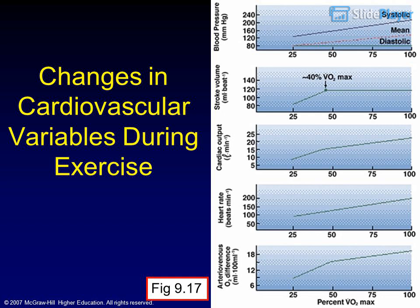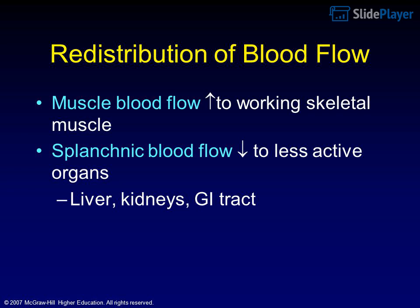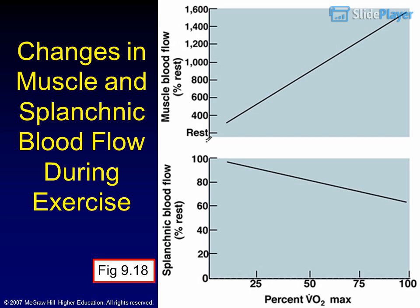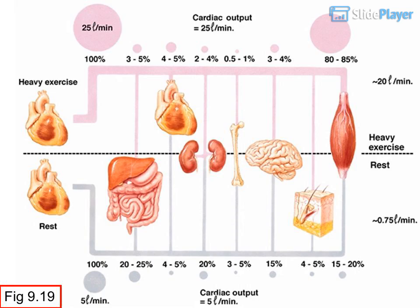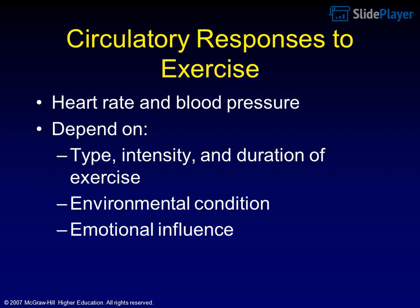Cardiovascular variables during exercise are shown in Figure 9.17. Redistribution of blood flow: muscle blood flow increases to working skeletal muscle, while splanchnic blood flow decreases to less active organs such as the liver, kidneys, and GI tract, shown in Figures 9.18 and 9.19. Blood flow regulation involves withdrawal of sympathetic visceral constriction and autoregulation — blood flow increases to meet the metabolic demands of tissue, modulated by O2 tension, CO2 tension, potassium, adenosine, and nitric oxide.